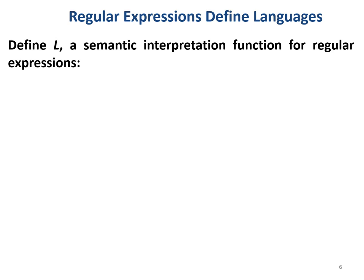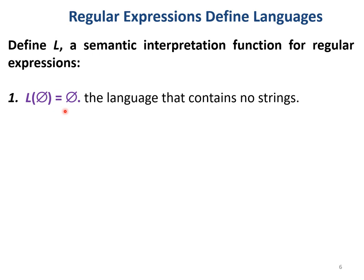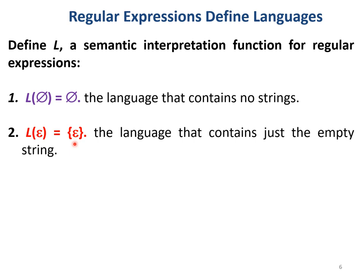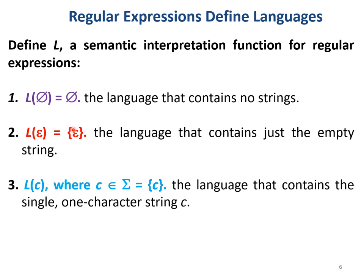Let us define L, a semantic interpretation function for regular expressions. L of null equals null — that is, the language that contains no strings. L of epsilon equals epsilon — that is, the language that contains just the empty string. L of c, where c belongs to Σ, equals {c} — that is, the language that contains the single one-character string c.